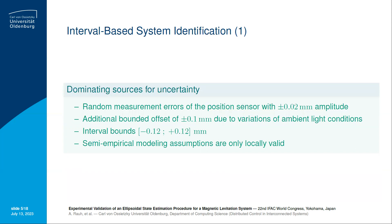Now what we want to do is include the dominating sources of uncertainty in the system identification. An analysis of the measurements obtained from the test rig has shown that especially the position uncertainty has the dominant influence on the estimation accuracy. It depends on random measurement errors of the position sensor of amplitude plus minus 0.02 millimeters, and additional bounded offset terms in the range of 0.1 millimeters due to variations of ambient light conditions. Altogether, we have a bounded interval uncertainty given in this interval representation, which does not contain any information about the probabilistic distribution within the corresponding bounds. Moreover, the semi-empirical modeling assumptions from the previous slides are only locally valid.